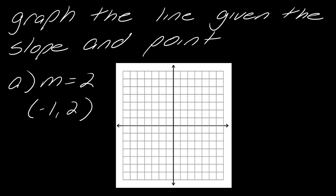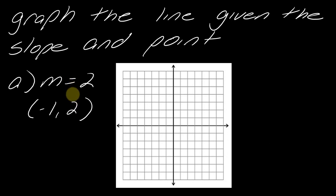So here's what we're going to do. I'm going to give you a point and a slope, and show you how we can make a line from this. Normally when we graph a line we have to have an equation, but if you know the slope and a point, you actually don't need an equation, believe it or not.